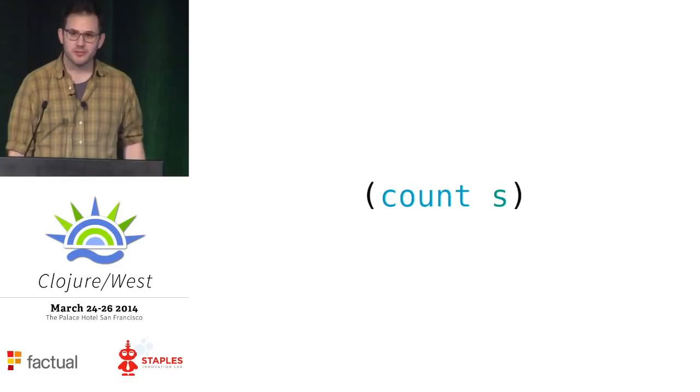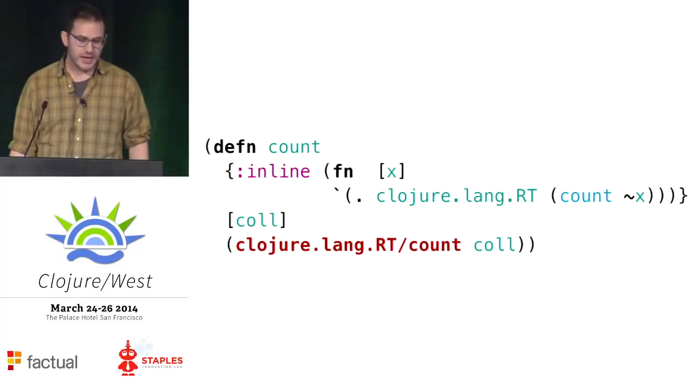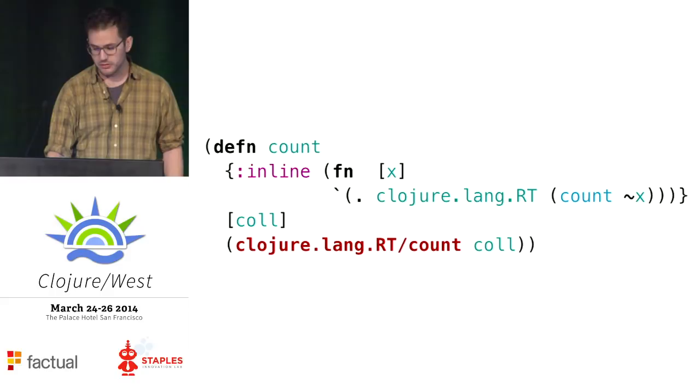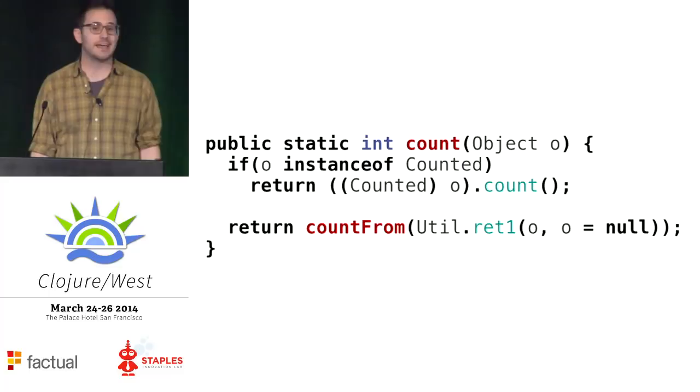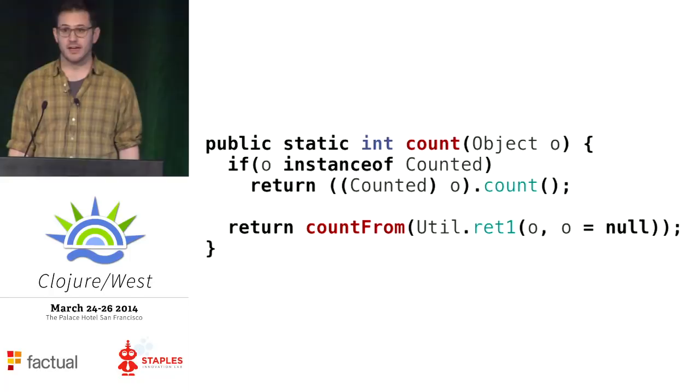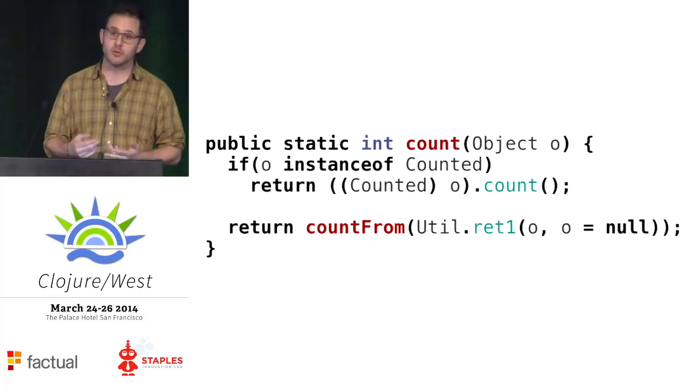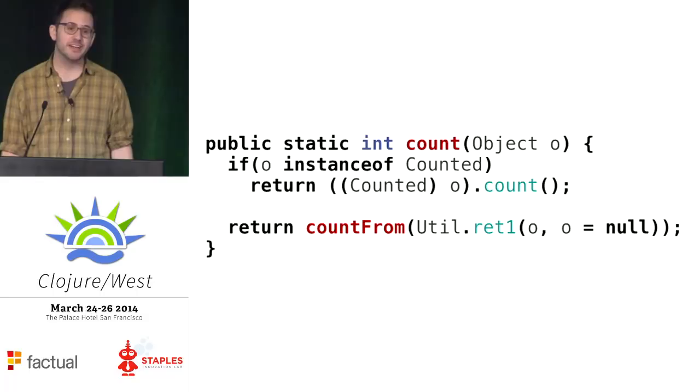So let's dig a bit. What happens when we call count? ClojureCore/count has an inline form, but really it just proxies through to ClojureLang.RT/count, which is a Java function. RT/count checks whether it's an instance of ClojureLang.Counted — true of a vector, map, or set — and if so calls .count. Otherwise it calls countFrom, which has handlers for a string, an array, or a java.util collection, or if it's a seq it walks it from beginning to end counting one each time.